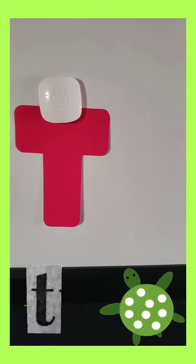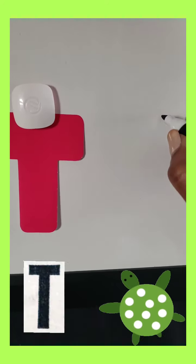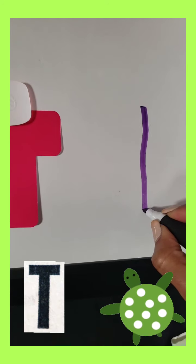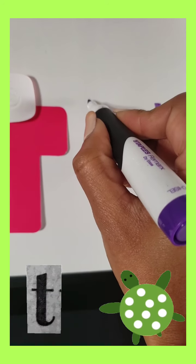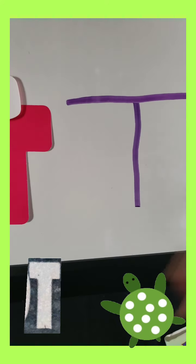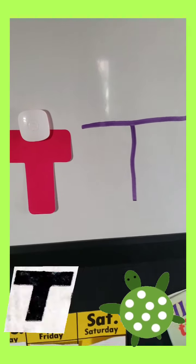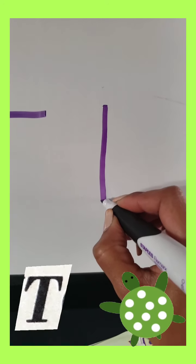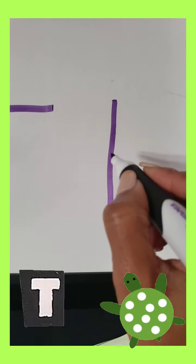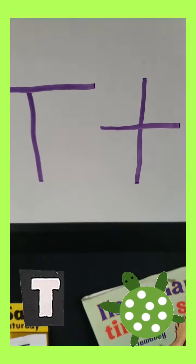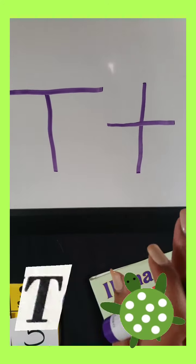And how we write T is you make a vertical line going down, stop, come back up to the top, and you're going to make a horizontal line going across. And there you have capital T. And little T is a vertical line going down, and then right in the middle of that vertical line is where you're going to do a horizontal line going across. And there you have capital T and little T.